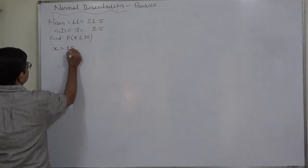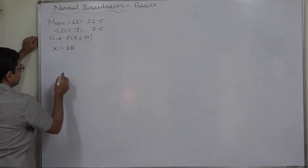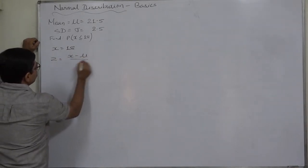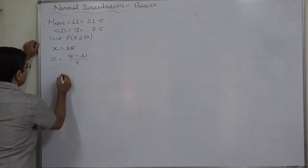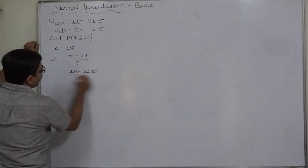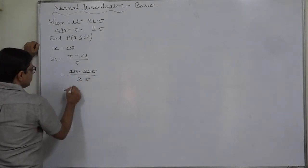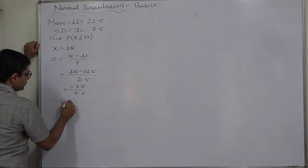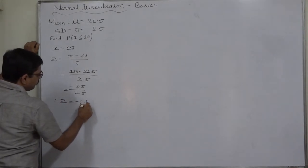Let us first calculate the z-score for x exactly 18. Z is x minus mu upon small sigma, or x minus mean upon standard deviation. That is 18 minus 21.5 upon 2.5, that is minus 3.5 upon 2.5. So z is minus 1.4.